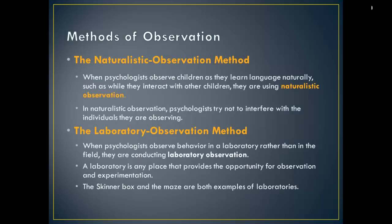Psychologists observing children as they learn language naturally, or watching how people behave in a situation, are using naturalistic observation. This is the best way to view how people or animals behave — watching them in their normal environment. Researchers might observe people at workplaces, homes, playgrounds, restaurants, malls, and public areas. The advantage is that it gives a realistic picture of how behavior occurs. However, animals or people who know they're being watched won't behave normally — this is called the observer effect — so the observer needs to remain hidden from view.